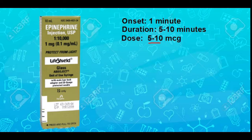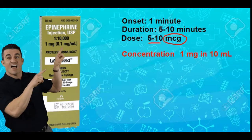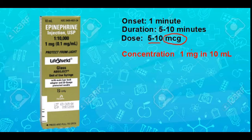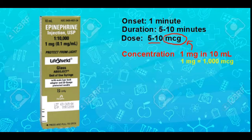We have a dose of five to ten micrograms, and micrograms is the unit of measurement for the dose, so that's where our math is going to have to take us. The concentration of that cardiac epi is one milligram in ten milliliters, but we have to somehow get from milligrams to micrograms. We know that there are a thousand micrograms in one milligram, so that concentration of one milligram in ten milliliters is the same as a thousand micrograms in ten milliliters.